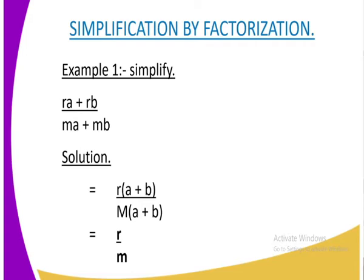Let us now get into the simplification by factorization whereby we are going to have Example 1 and we are required to simplify the following. We're given ra + rb all divided by ma + mb. On the solution part, we are going to get your r because it's common in both expressions. So when you get your r outside, you're going to remain with r(a + b). That is the numerator. And then on our denominator, in our question, m is common.